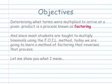Determining what terms were multiplied to arrive at a given product is a process known as factoring. And since most students are taught to multiply binomials using the FOIL method, today we're going to learn a method of factoring that reverses that process. Let me show you what I mean.